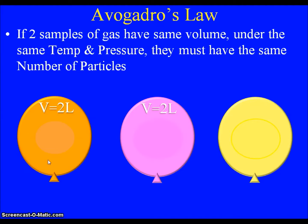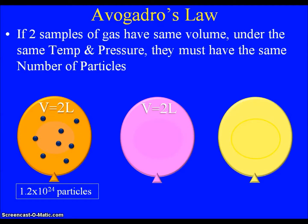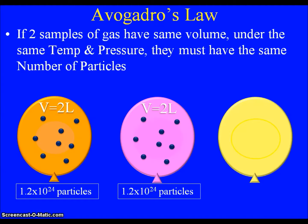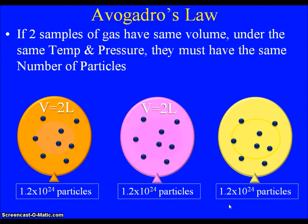So with our three balloons all at the same temperature and pressure: if my orange balloon has a volume of 2 liters and there's 1.2 times 10 to the 24th particles in that orange balloon, then my pink balloon — since it's under the same conditions and the same volume — must also have 1.2 times 10 to the 24th particles. And if the yellow balloon also had 1.2 times 10 to the 24th particles at the same temperature and pressure, we could predict its volume would be 2 liters. As long as we've got the same number of particles at the same temperature and pressure, they're going to have the same volume, and vice versa.